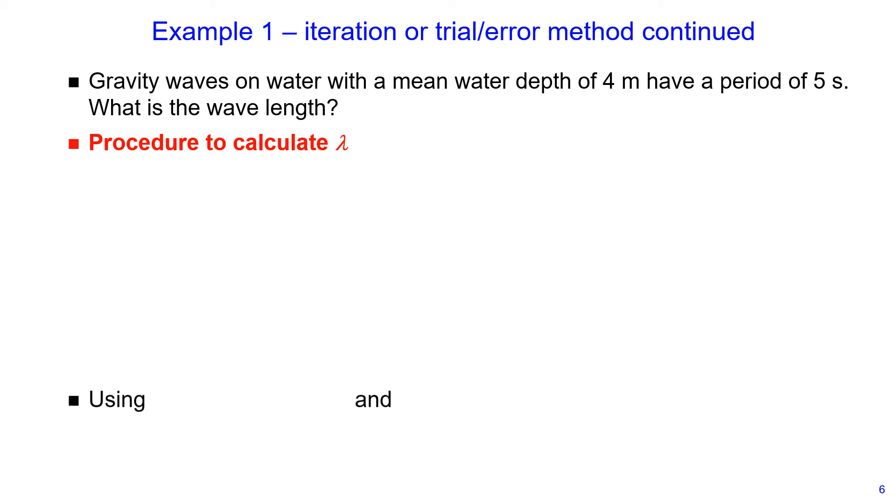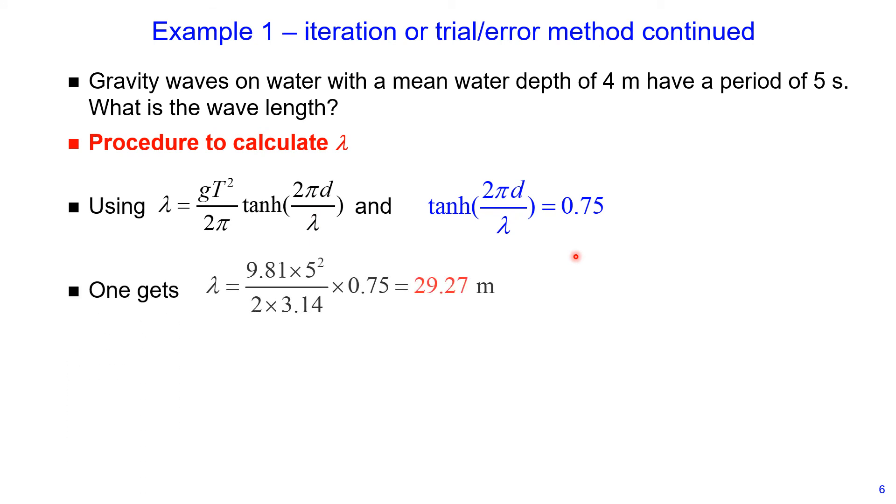So now what we do, we take our assumed value of hyperbolic tangent of 0.75 and use the full equation to calculate wavelength. And we get the wavelength to be 29.27 meters. And now using this obtained value of 29.27 meters, I calculate my next wavelength value, and this would be 27.15 meters. So what you can see is what I did: I substituted instead of lambda on the right hand side, I used the value which I obtained before, 29.27, and I got 27.15 meters.